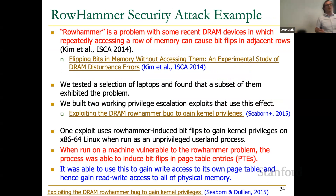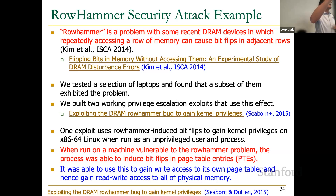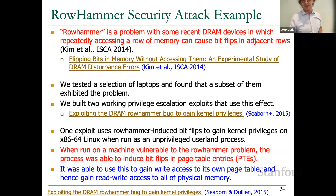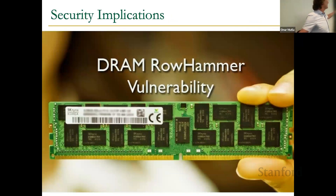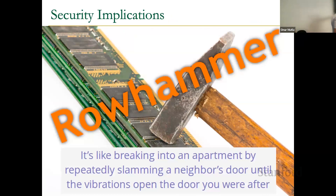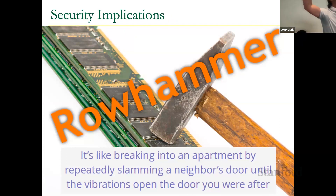Google Project Zero replicated the problem on a selection of laptops and wrote two exploit programs. One escaped the sandbox of Google Native Client's virtual machine. The other, as a user-level process, gained kernel privileges on x86-64 Linux by hammering page table entries — by flipping the right bits, they gained write access to their own page table, which is essentially the protection mechanism of virtual memory. Once you gain write access to your own page table, all bets are off. This became famous as the RowHammer vulnerability — described aptly as 'breaking into an apartment by repeatedly slamming a neighbor's door until the vibrations open the door you were after.'